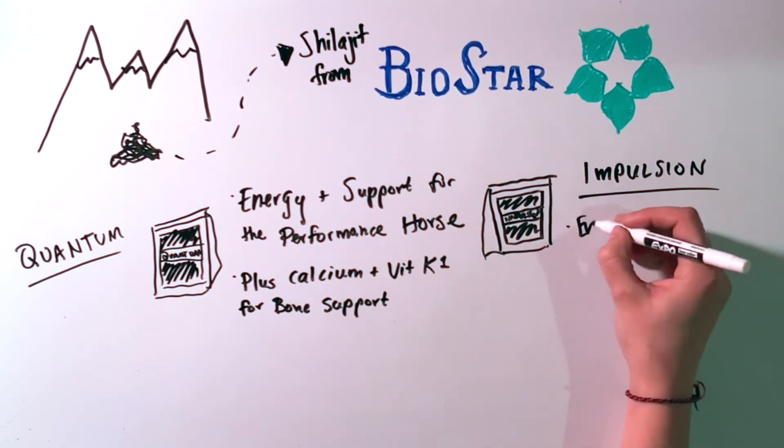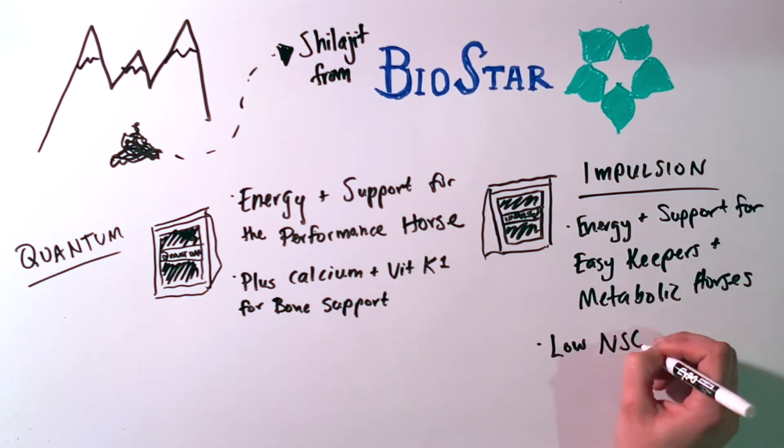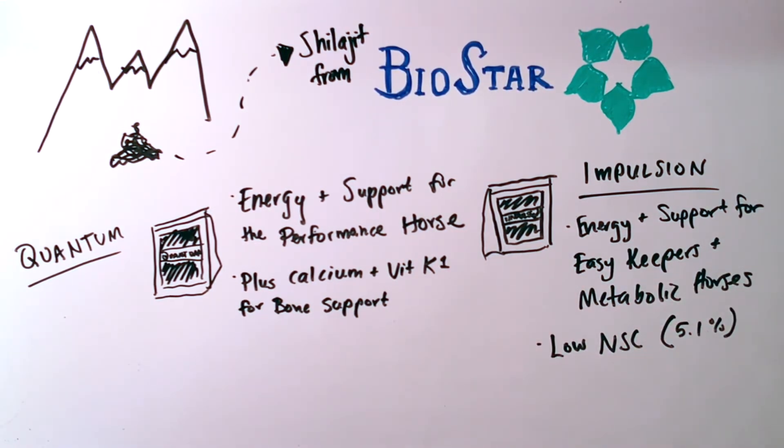Impulsion is a formula designed with easy keepers and metabolic horses in mind. It has a low NSC non-structural carbohydrate level of only 5.1%.